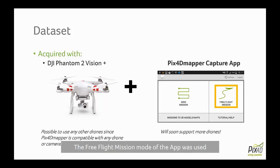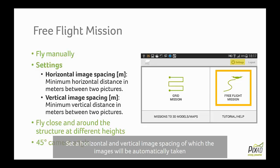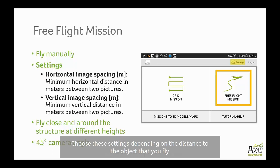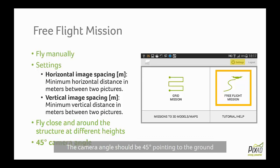To capture the images, the free flight mission of the application was used. With this mode you need to fly manually the drone and set a horizontal and vertical image spacing at which the images will be automatically taken. Choose these settings to have enough overlap depending on the distance to the structure that you fly. When you fly the drone, fly close to the structure and around it to cover all angles and at different heights. The camera angle should be about 45 degrees to cover as much ground as possible and less sky content.